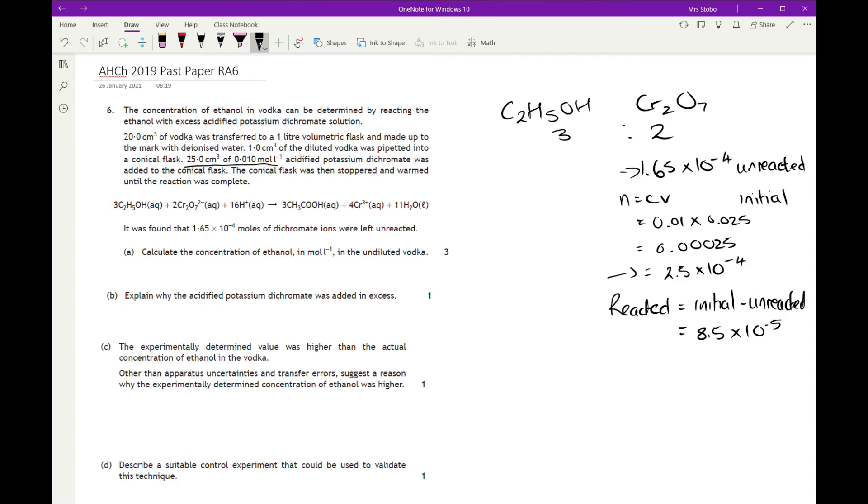Then we go back to our ratio. We need to take that 2 to 3, so divide by 2 and times by 3, which tells me I have 0.0001275 moles of ethanol reacted.